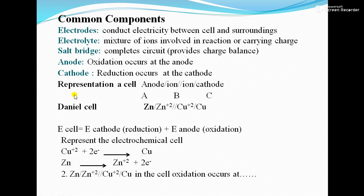Next is the representation of a cell. You can remember it as A for anode, B for salt bridge, C for cathode. You always write first the anode metal or anode electrode, then the anodic ion, then the salt bridge, then the cathodic ion, and then the cathode. For the Daniel cell, the representation is: Zn | Zn²⁺ || Cu²⁺ | Cu. In general: anode | anodic solution || cathodic solution | cathode.